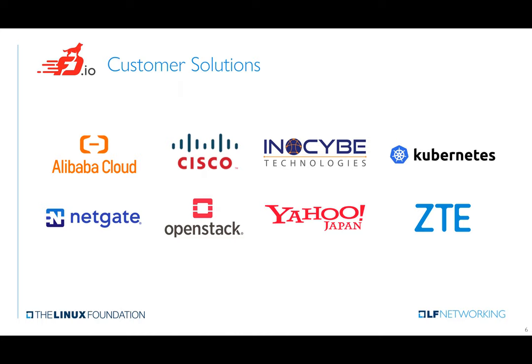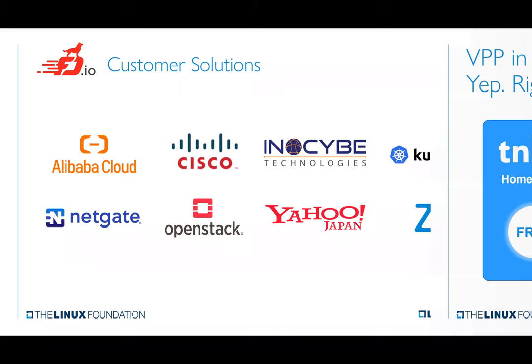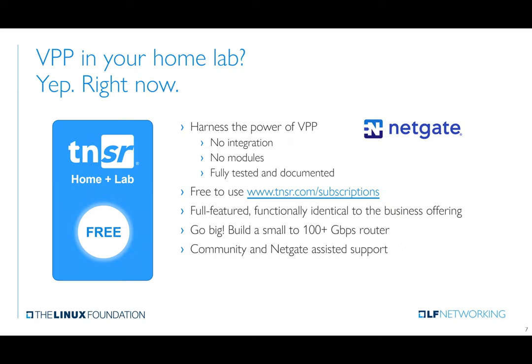I represent NetGate, and we make Tensor software — that's a high-performance software router. To help further promote VPP, NetGate made Tensor available for free, making it easier for network operators interested in trying VPP without having to spend time learning about optional packages or doing any integration. All you have to do to get started is go to tensor.com to register. We'll provide you a link to download the software — it's a single software download that you can install and get started right away, with loads of helpful documentation for deploying a full-featured high-performance router on your own hardware.